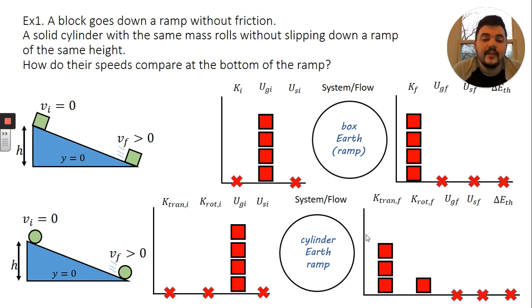All right. And now we look at these two LOL diagrams and we can answer our conceptual question. The block ends up with all four bars of translational kinetic energy. The cylinder only ends up with three out of the four blocks of translational kinetic energy. So the block is going to be moving faster than the cylinder that is rolling.